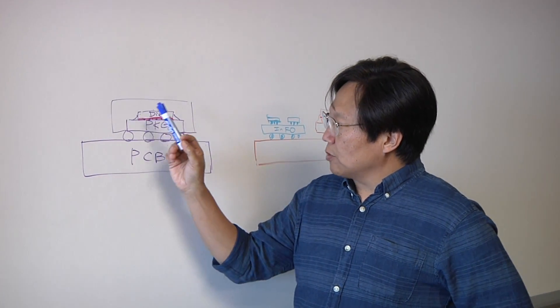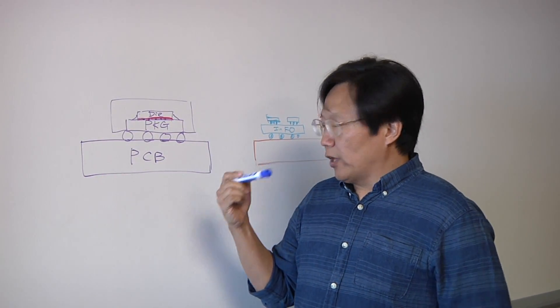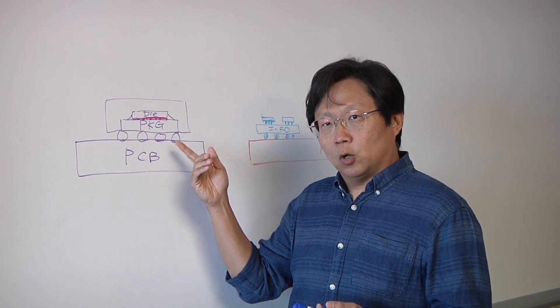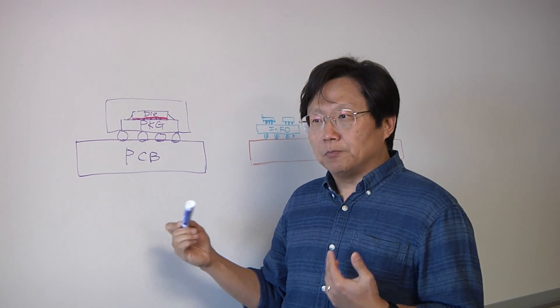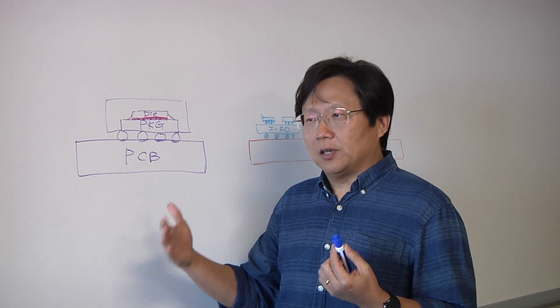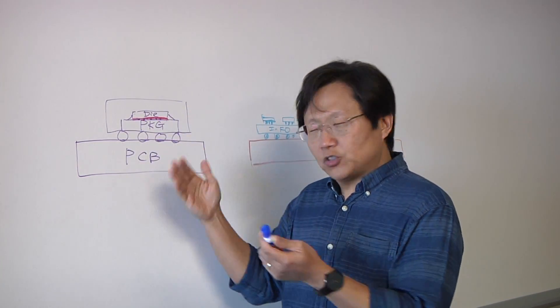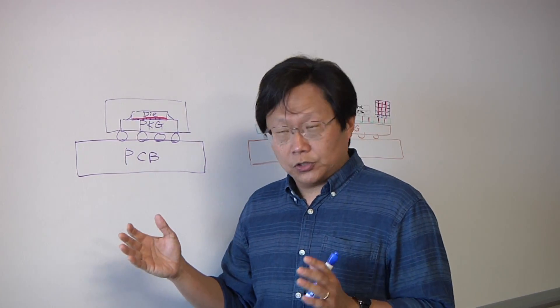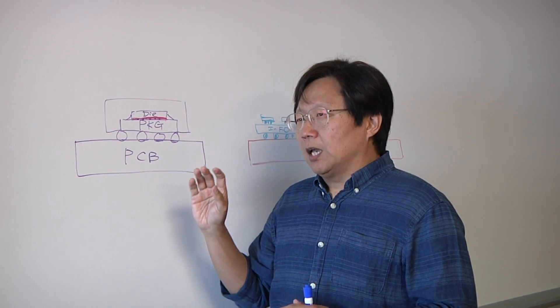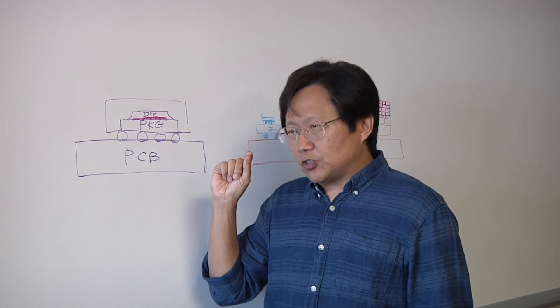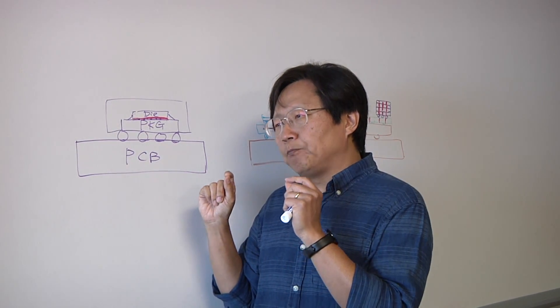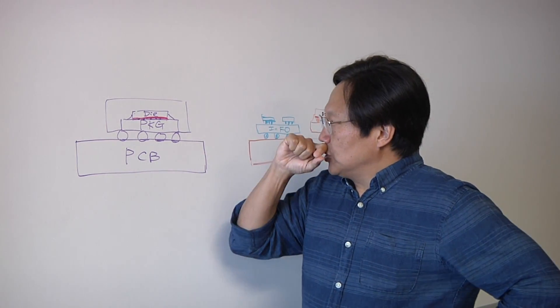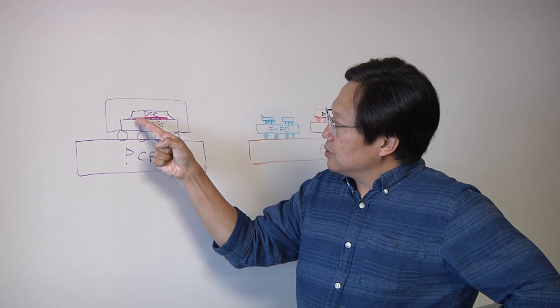Then we have the JEDEC standard to analyze the thermal performance inside the die or inside the mold. It could be theta JA, JB, JC. The J means junction to ambient, junction to the board, junction to the case. There are basically just thermal resistors characterizing this whole assembly, and thermal resistors just indicate the steady state solution of the thermal issues.